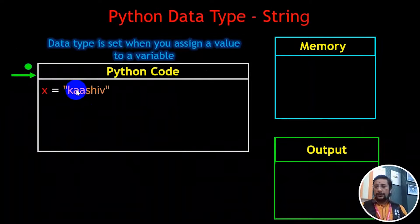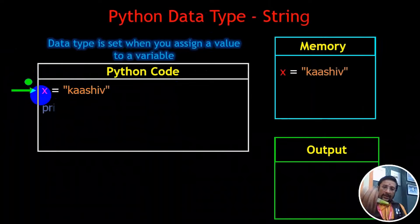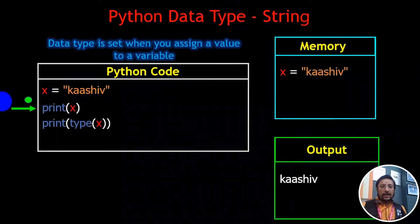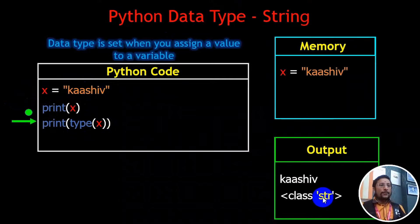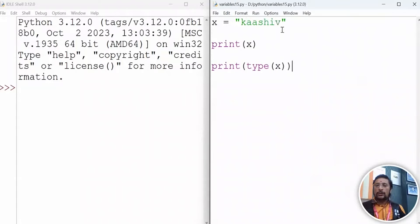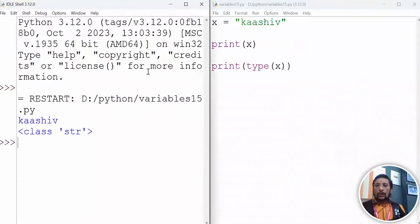X is equal to Kashiw — this is the data type. The data type is in X is equal to Kashiw. This is the IDLE — the Integrated Development Language Environment. Now we will run the environment. We will run the output of Python and you will see the output.